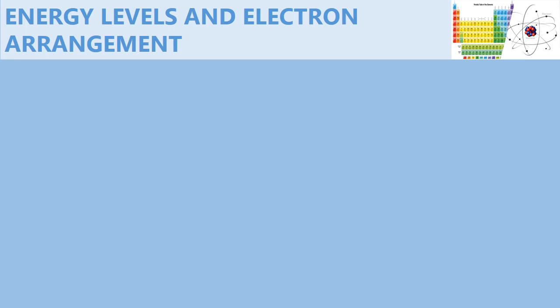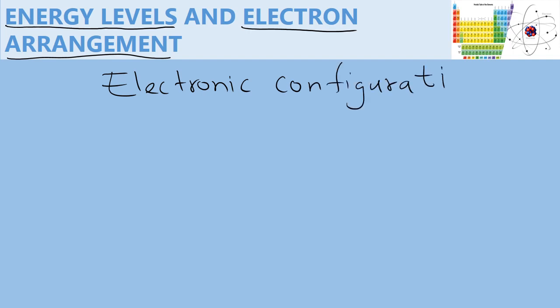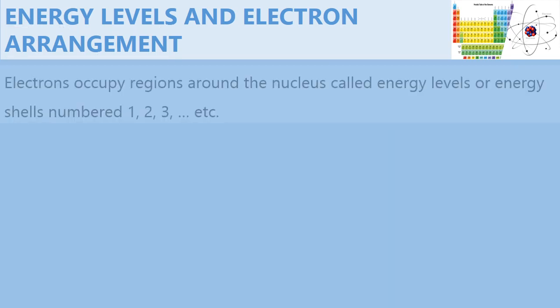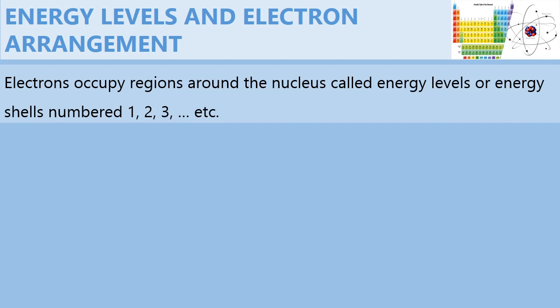Electrons usually occupy what we call energy levels, and the manner in which they are arranged is known as electron arrangement or sometimes electronic configuration. Electrons occupy regions around the nucleus called energy levels or energy shells.